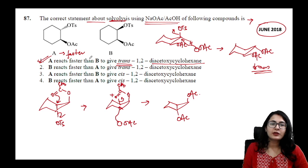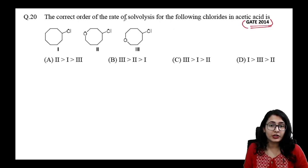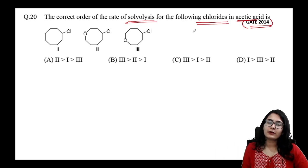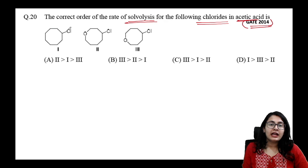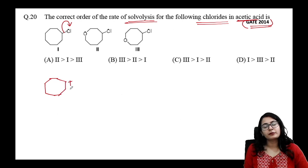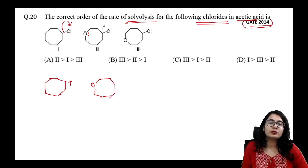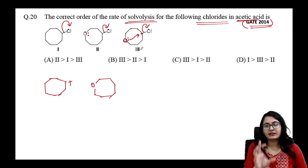Another important Gate 2014 question asks for the correct order of rate of solvolysis of chlorides in acetic acid. For compound 1, the chloride leaves to give a simple secondary carbocation. For compound 2, oxygen is present but if NGP would form an unstable ring it will still attempt to share electron density toward the carbocation, but strain prevents it.